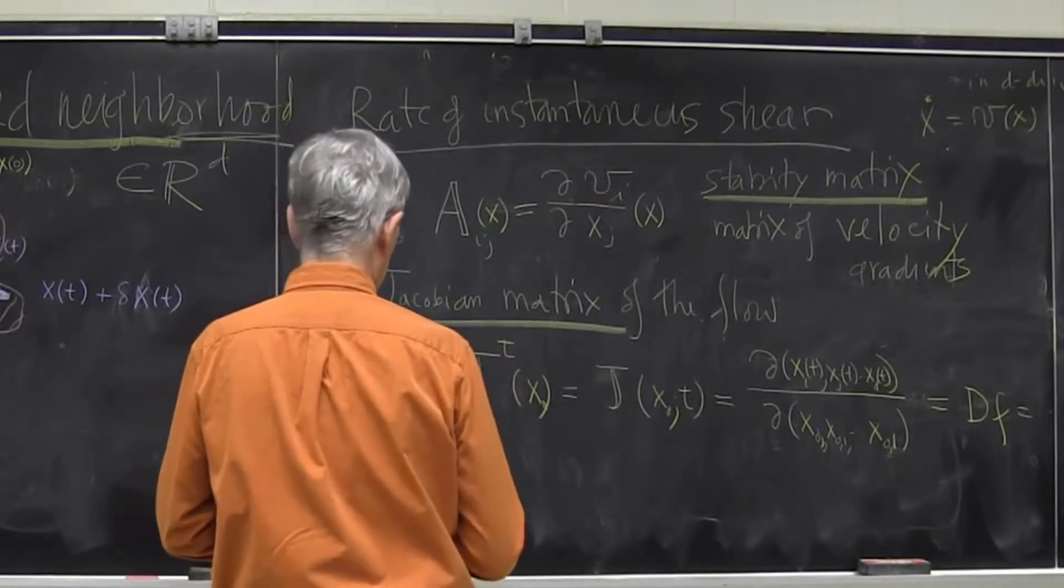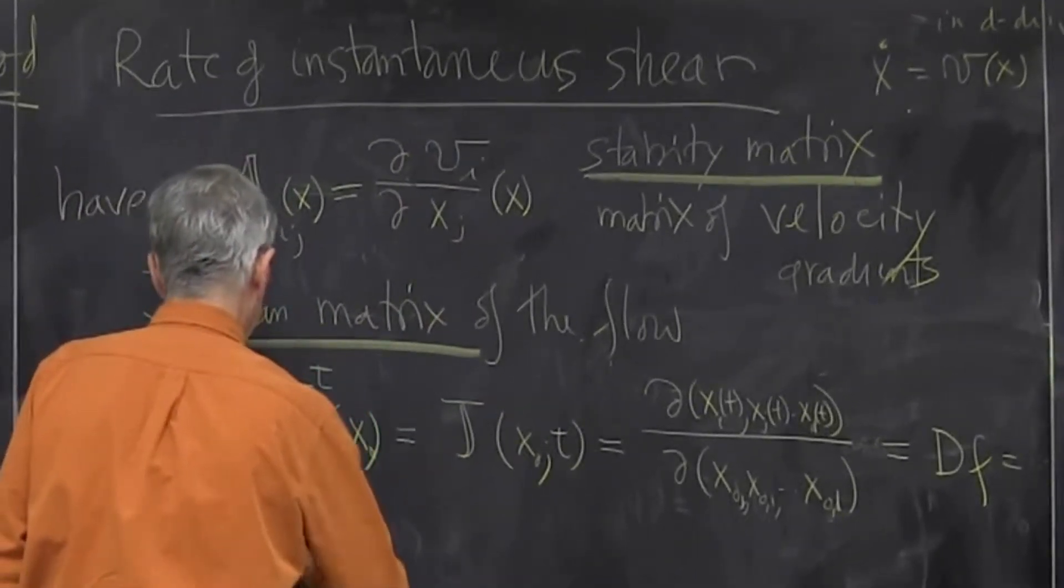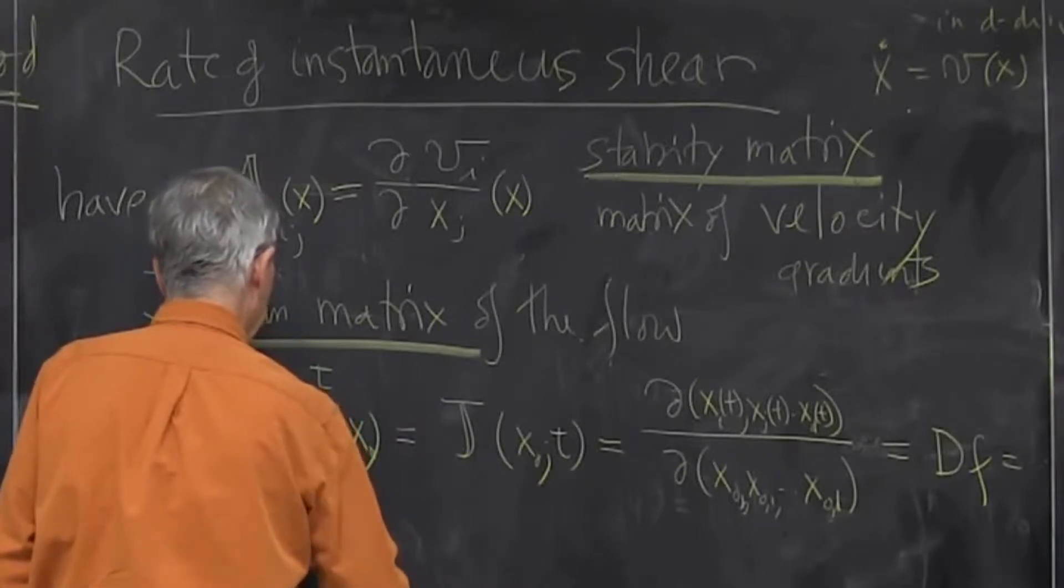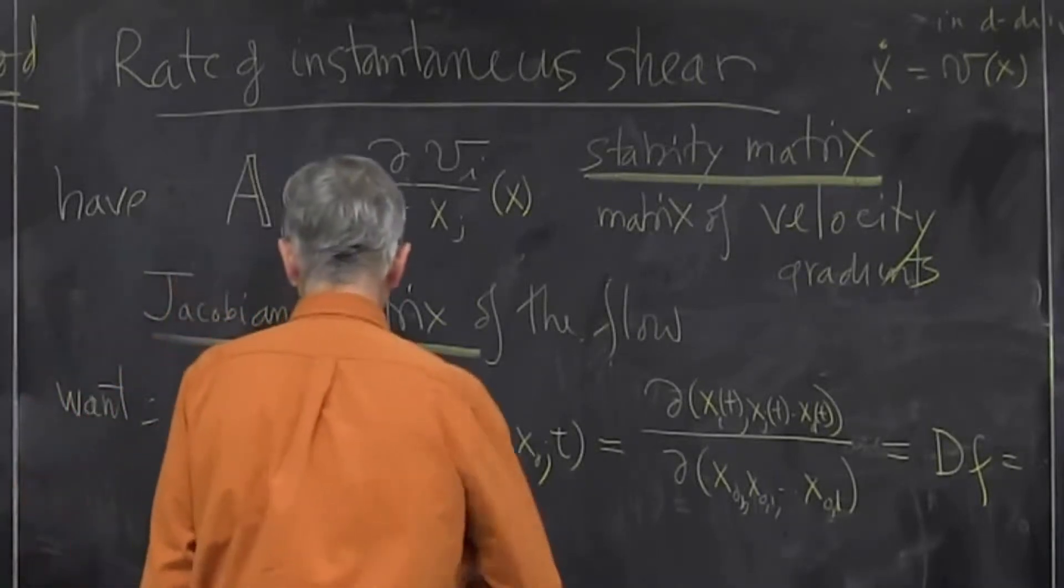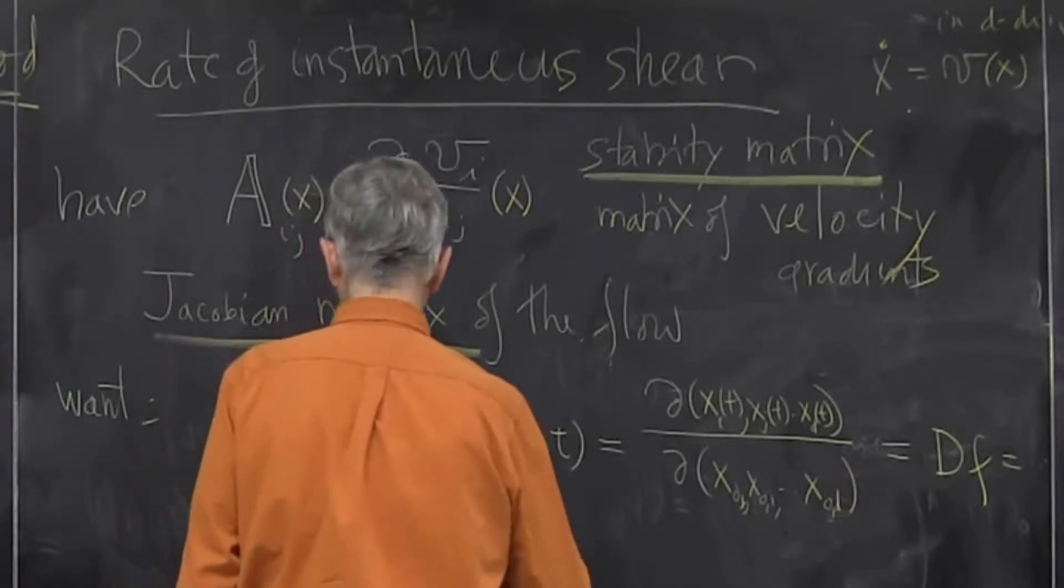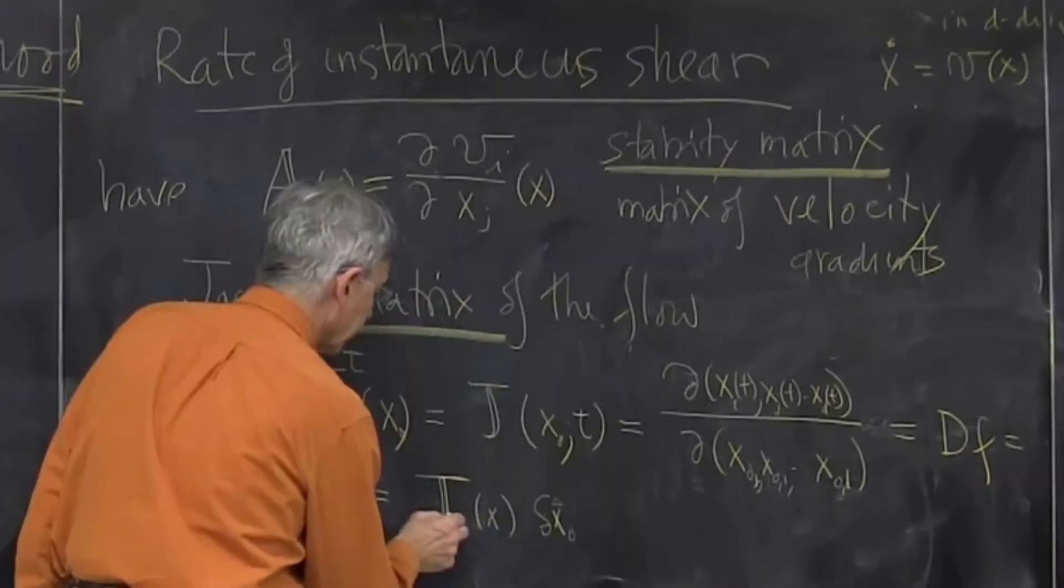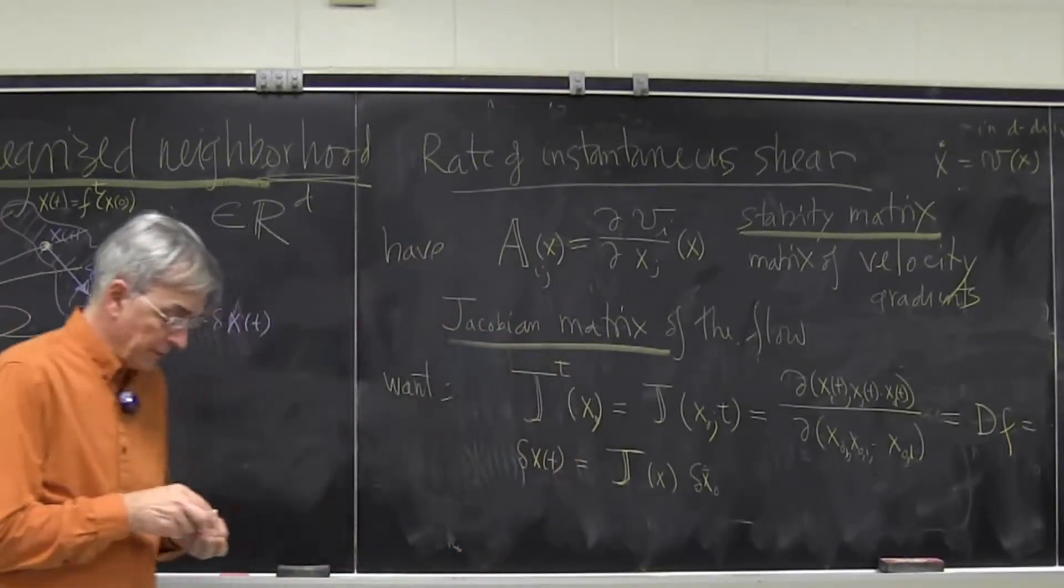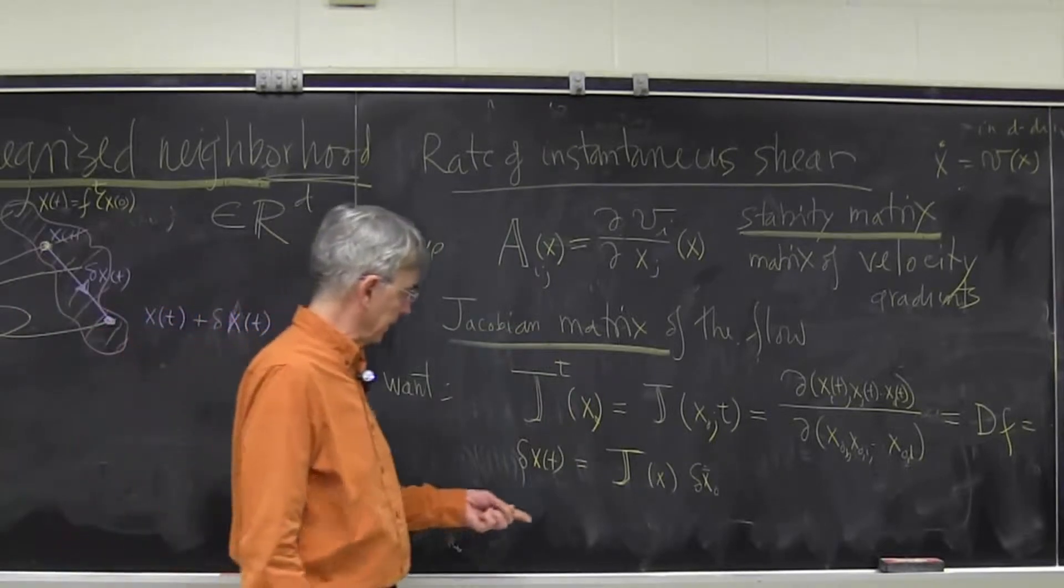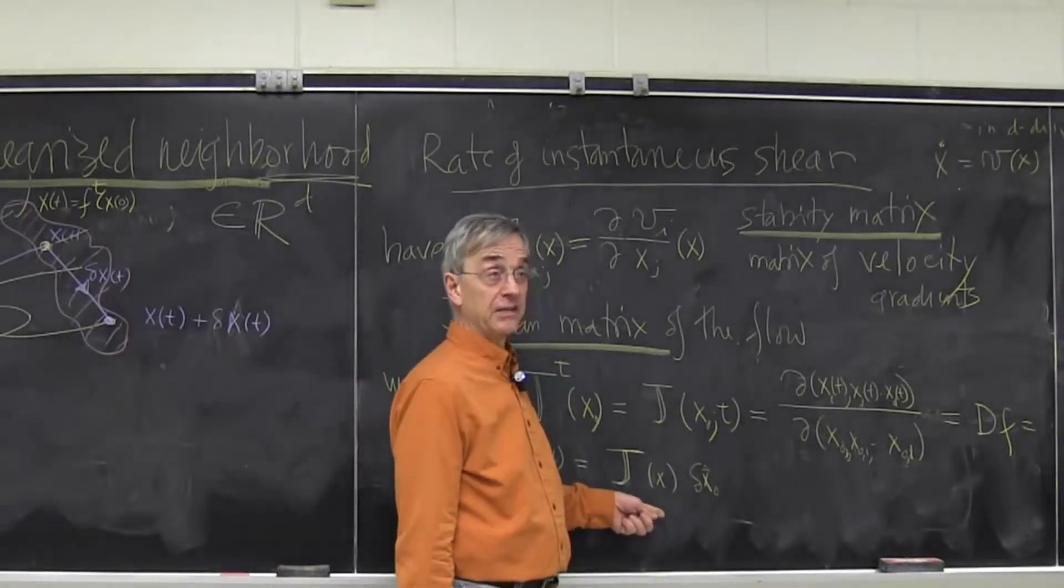I got an equation that said that a neighbor at time T was just a multiplication by a matrix of the neighbor at time 0. So this is linear, and what you know about linear problems is that whenever you have a linear problem in some matrix, you immediately look at its eigenvalues and eigenvectors.